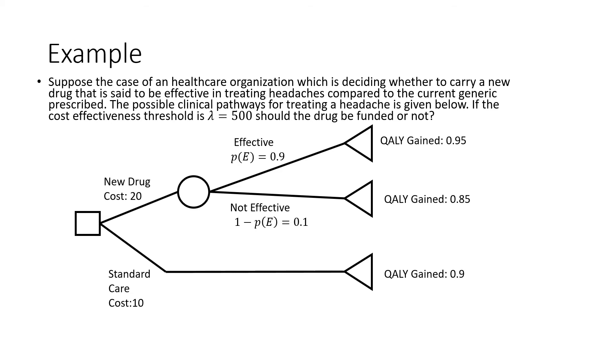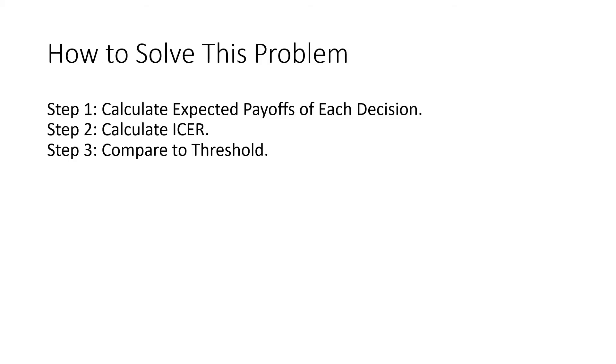Let's see how we solve this. The steps for solving this are: we're going to calculate the expected payoff of each decision, calculate the ICER, and then compare it to threshold.